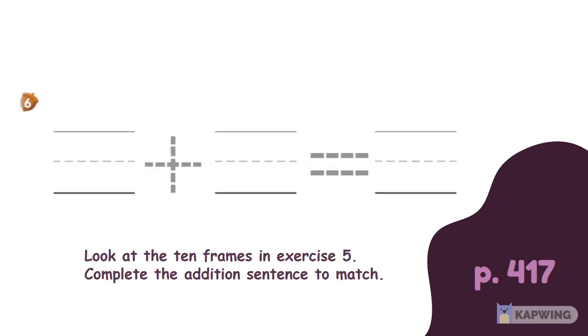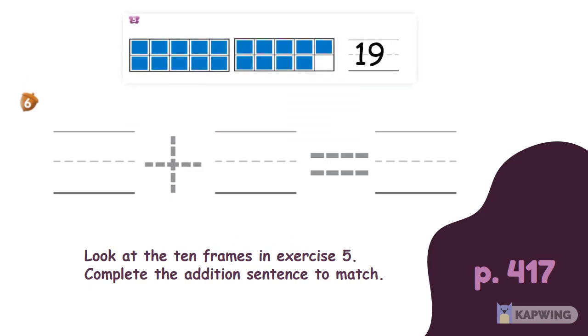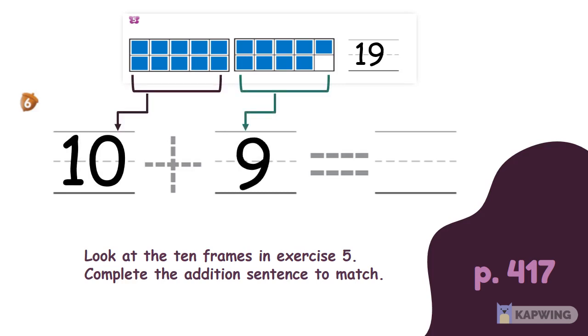Next, we will complete the addition sentence to match the 10 frames from the previous exercise. How many counters do we have on the first frame? Yes, it's 10. Now, how many counters do we have on the second frame? Good job! It's 9. 10 plus 9 equals 19.